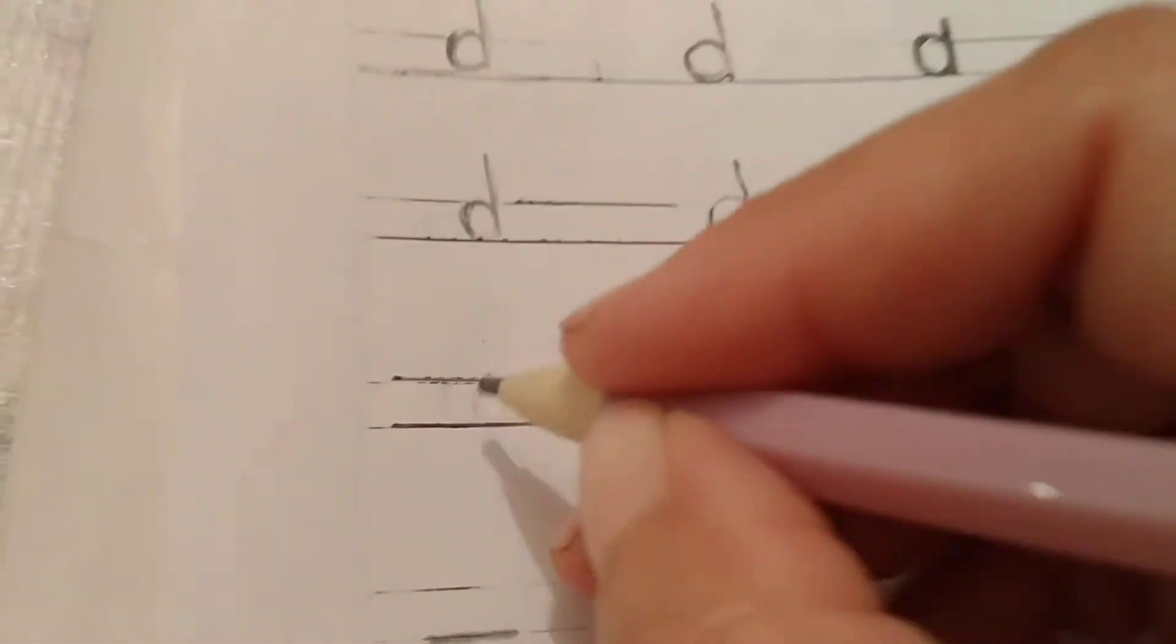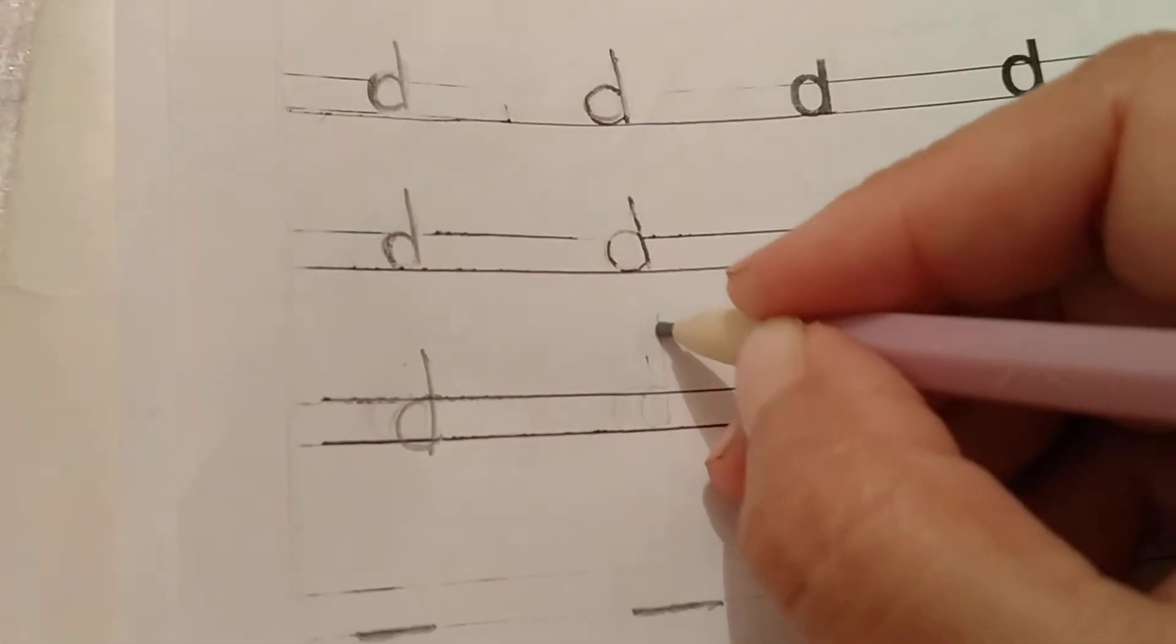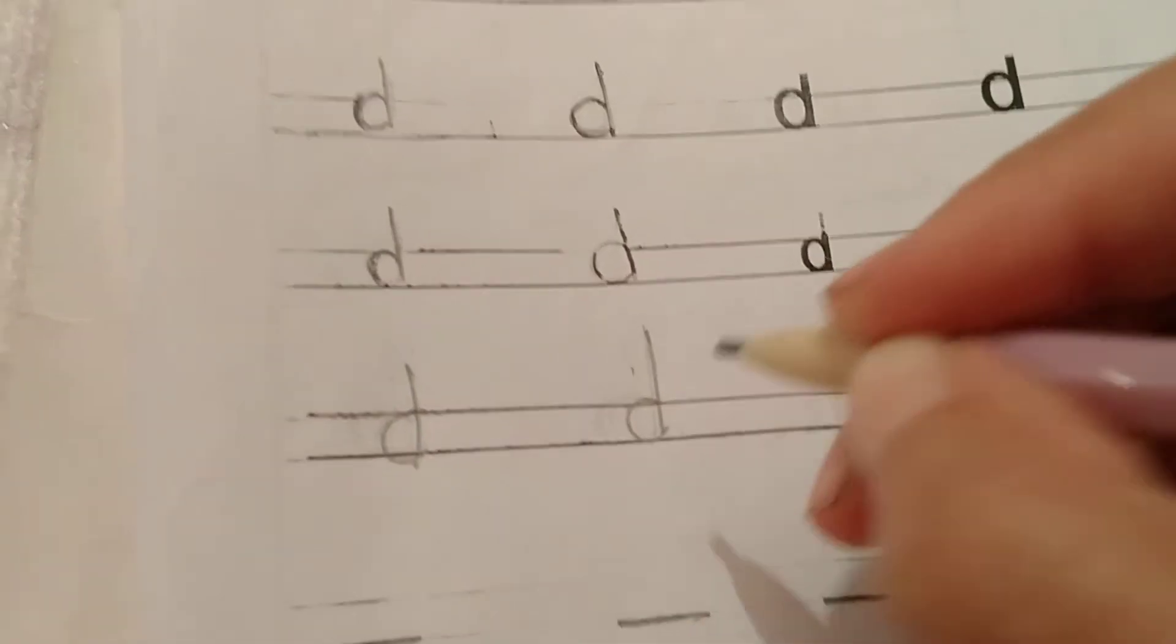Small d, straight line from the other side. We do little curve. Straight line, little curve.